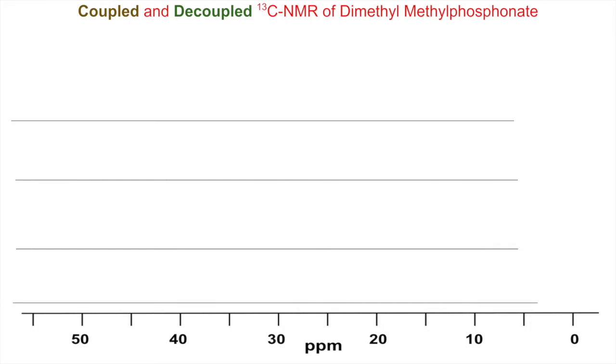Here's the coupled and decoupled carbon-13 NMR of dimethyl methylphosphonate, a fire retardant. The structure has a methyl group with three equivalent hydrogens, and two methyls on the oxygens that are equivalent with three hydrogens each.